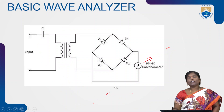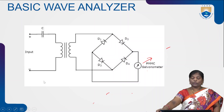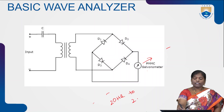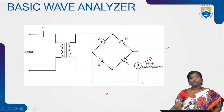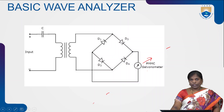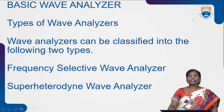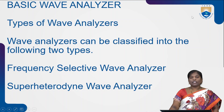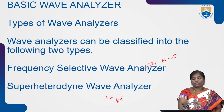Wave analyzers are used to find out the performance of any wave at low or high frequency. Normally these wave analyzers are used at audio frequency, that is from 20 Hz to 20 kilohertz. Wave analyzers are classified into two types: first, frequency selective wave analyzer, and second, super heterodyne wave analyzer. Frequency selective wave analyzers are used for low or audio frequencies, whereas super heterodyne wave analyzers are used at RF signal frequencies.